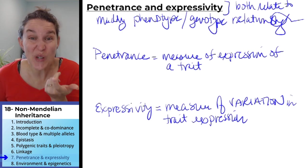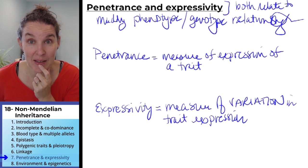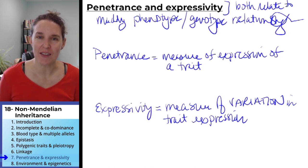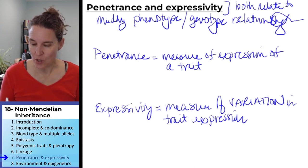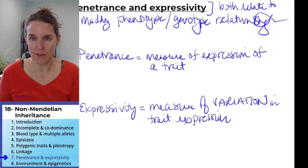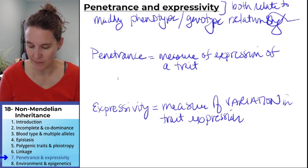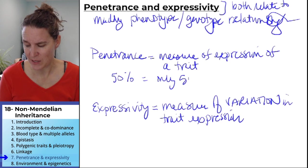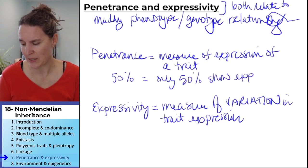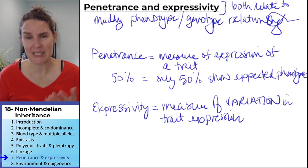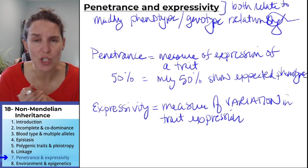This is the piece that says, well, you can have that genotype and not express the expected phenotype. So 50% penetrance means that only 50% show the expected phenotype. And some of them just randomly don't show it.